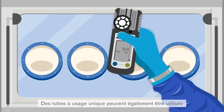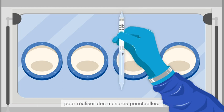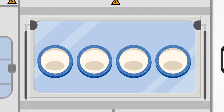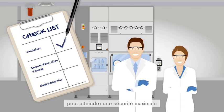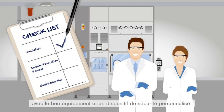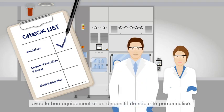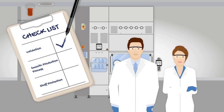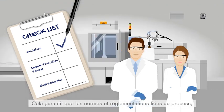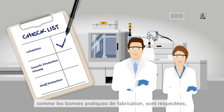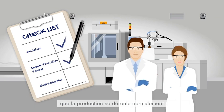Alternatively, disposable tubes may also be used to take spot measurements. Any pharmaceutical research and manufacturing facility can achieve maximum safety with the right equipment and a customized security concept. This ensures that all process regulations and standards, like good manufacturing practice, are met. Production runs smoothly, and staff are protected in the best possible way.